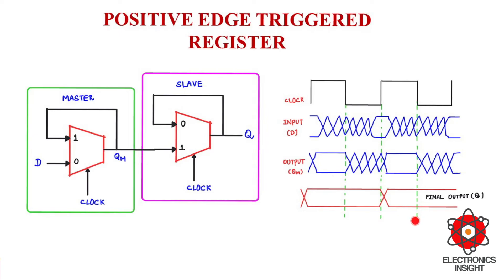This is the final output of the positive edge-triggered register based on a master-slave configuration using multiplexers. The reason why we have the slave as a positive latch is that we are implementing a positive edge-triggered register, and the final output Q is obtained from the slave output. So obviously, the slave has to be a positive latch implementation. Using the same principle, a negative edge-triggered register can also be constructed — the only difference is you need to switch the order: the master should be a positive latch and the slave should be a negative latch.